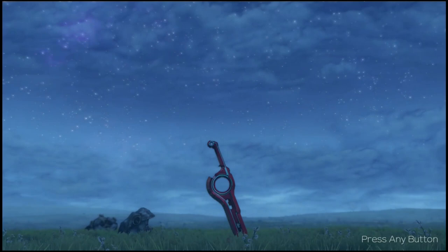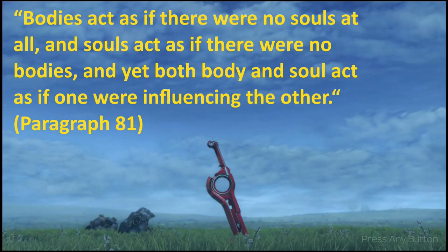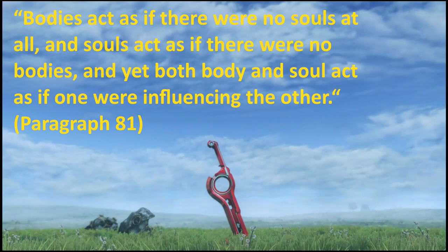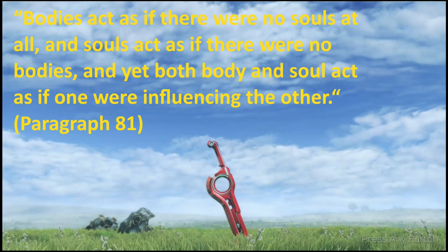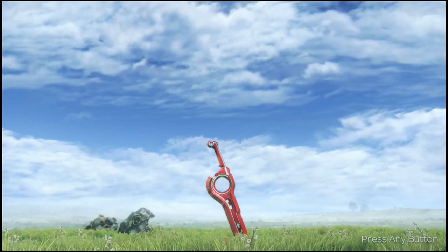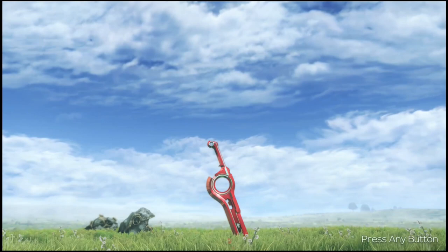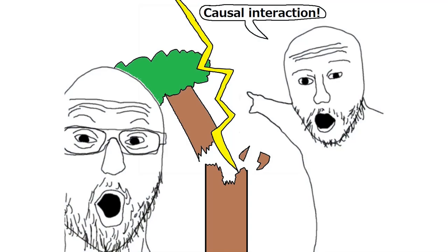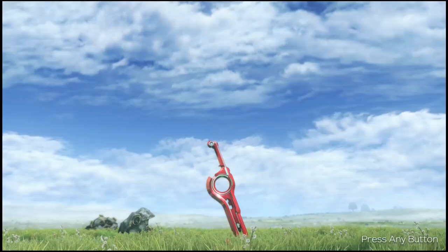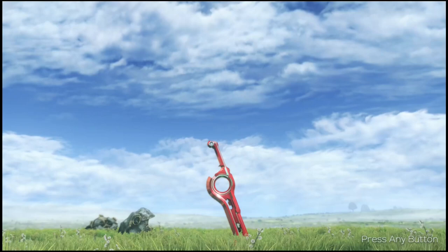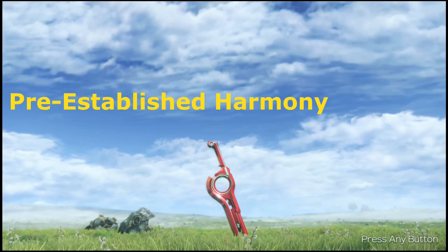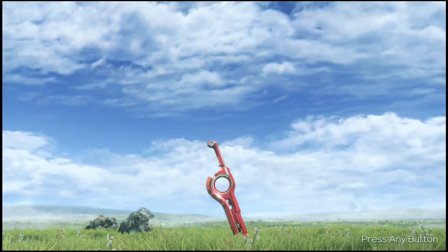Leibniz says: 'Bodies act as if there were no souls at all, and souls act as if there were no bodies. And yet both body and soul act as if one were influencing the other.' The body is purely physical and the soul is immaterial; they only appear to interact because they've been programmed in advance by God's will to create an illusion of interaction. All events must be predetermined for this illusion to work — this is what Leibniz calls the pre-established harmony. The text is really dense despite its short length.